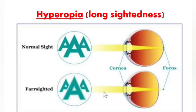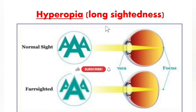Now, hyperopia. Hyperopia is basically known as long sightedness. As the name suggests, a person with hyperopia is able to see far or distant objects clearly compared to near objects.